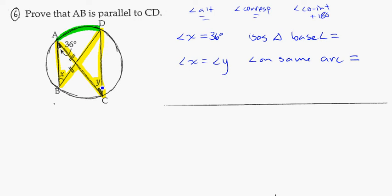Now that I know that X and Y are equal, I can then say that I know that Y is equal to 36 degrees, because I know X is equal to 36 degrees. And then since angle Y is equal to 36 degrees, that tells me that angle BAC is equal to angle ACD.